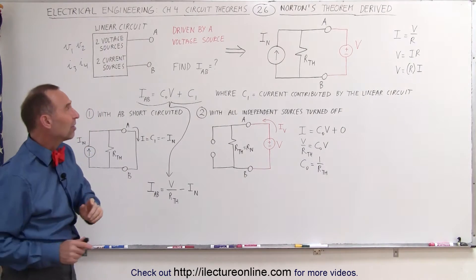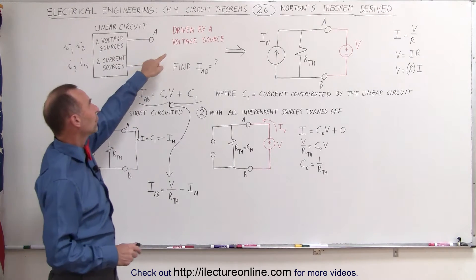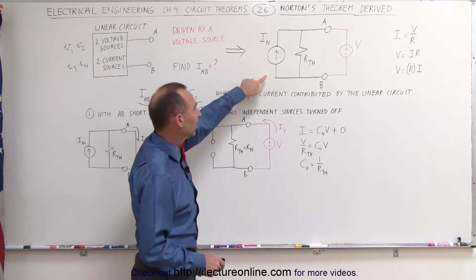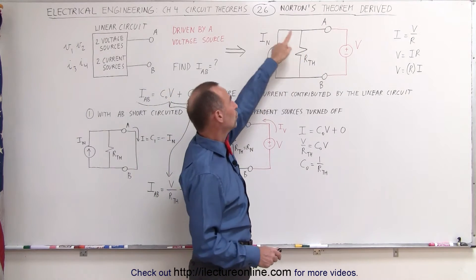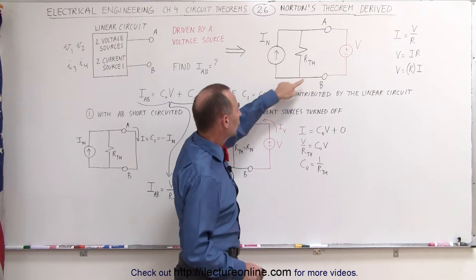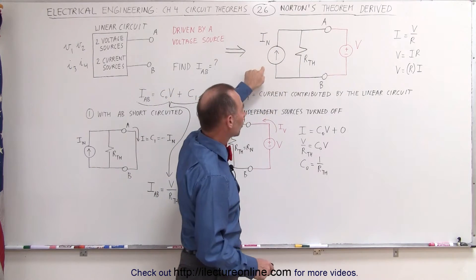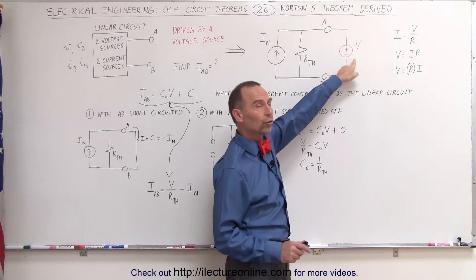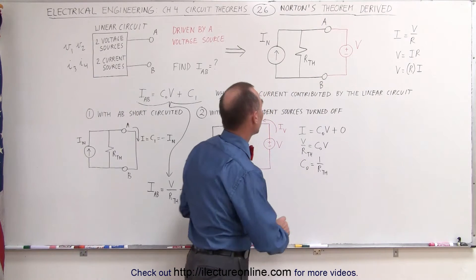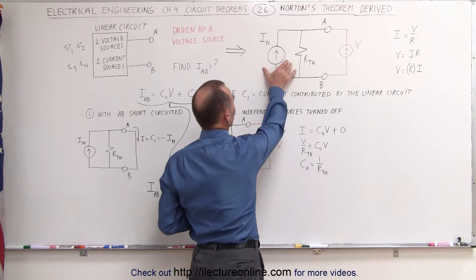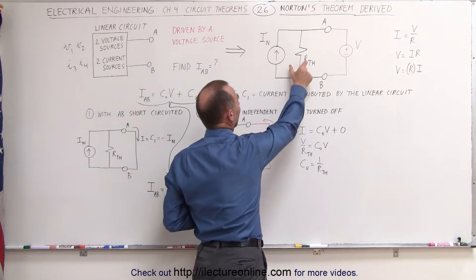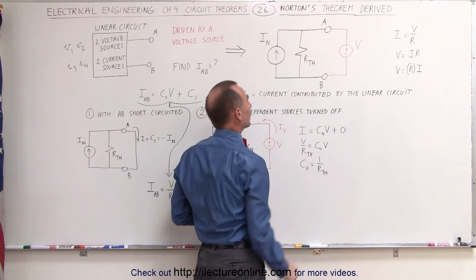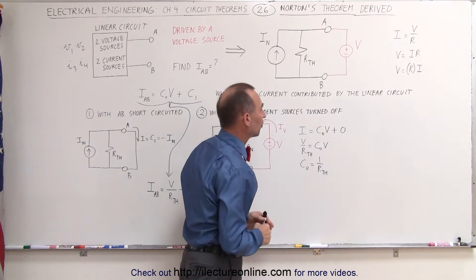In this case, we're going to drive it with a voltage source so that the circuit looks like this. This is the assumed Norton equivalent circuit, and we attach a voltage source to that circuit. We have the Norton current and the Norton resistance, which is the same as the Thevenin resistance.